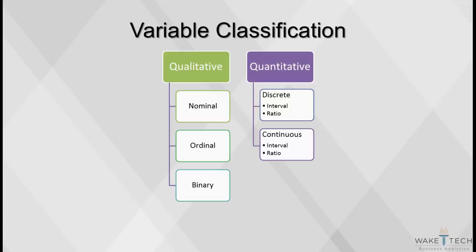Variables can be qualitative or quantitative. Qualitative data can be nominal, ordinal, or binary. Quantitative data can be discrete or continuous, with either an interval or ratio level of measurement.